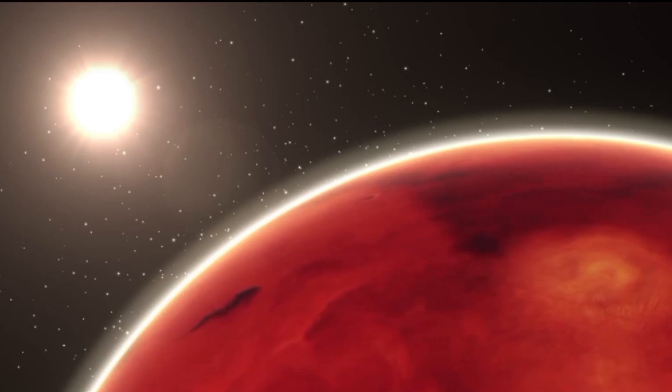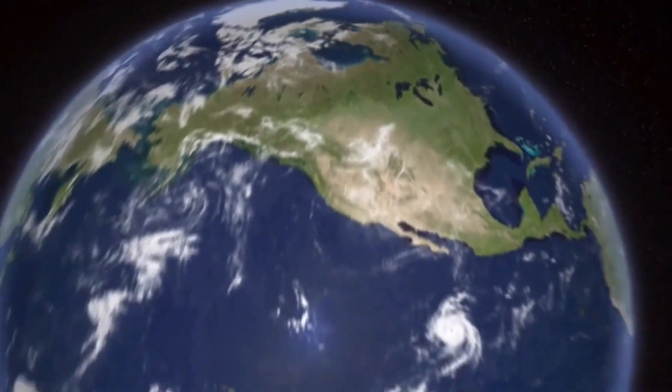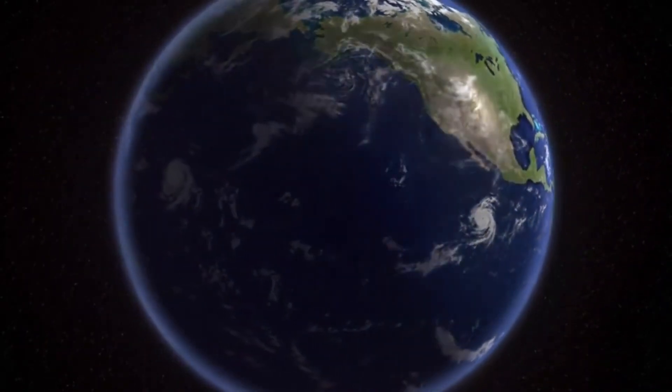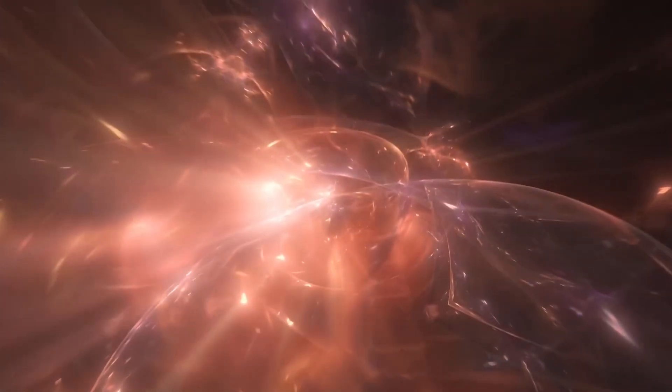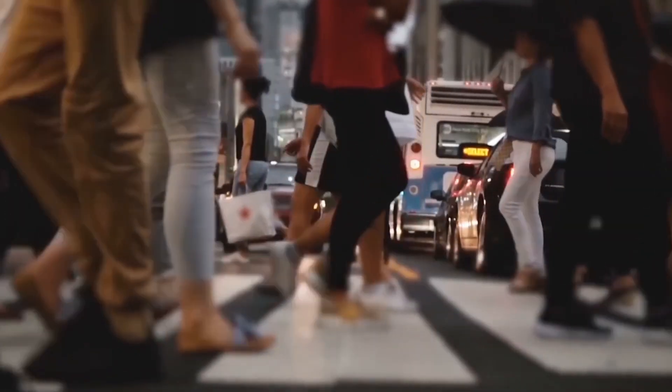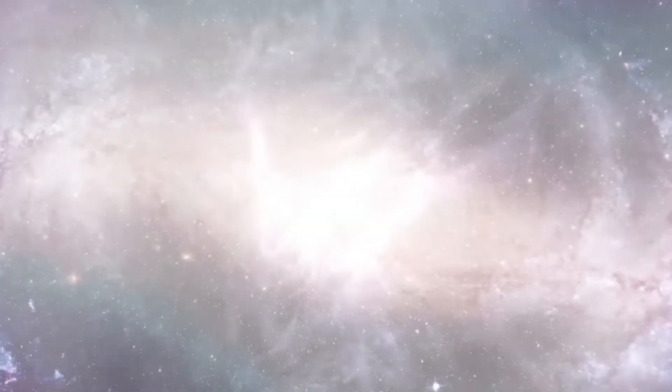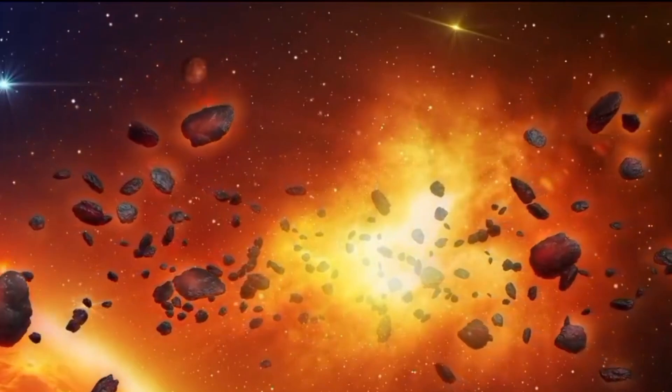Well, this red supergiant is a bubbling cauldron of nuclear reactions. Deep within its core, hydrogen atoms fuse to form helium, releasing vast amounts of energy in the process. This energy pushes outward, causing the outer layers of the star to expand. But as they expand, they cool down, leading to a decrease in brightness. Over time, the outer layers contract again, heating up and increasing the star's luminosity. This cycle of expansion and contraction gives rise to the brightness variations we observe.